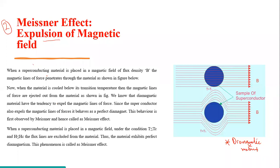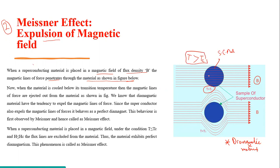When a superconducting material is placed in a magnetic field, if the temperature is above the critical temperature (T > Tc), the magnetic lines of force penetrate and cross through the material. But if the temperature of the material is brought below the critical transition temperature, the magnetic lines of force are expelled from the material. The material expels those magnetic lines.